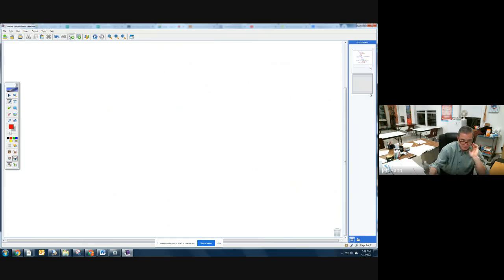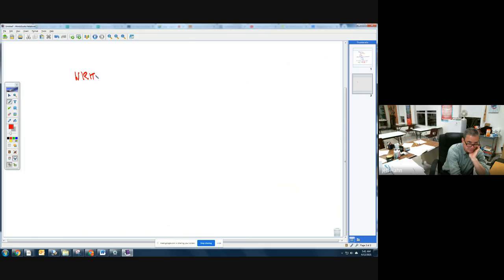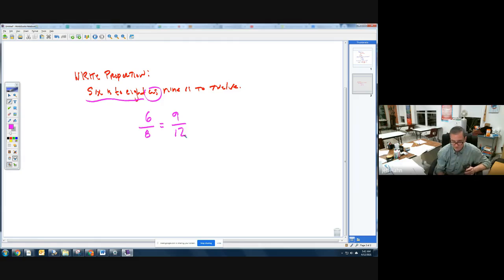Or at other times, they will just ask you to write the proportion. Write the proportion, and the book will say six is to eight as nine is to twelve. They just want me to write that out in fractional form. So it's just going to, again, this is the first part, six is to eight, as is the equal sign, nine is to twelve. And believe it or not, that is proportional. It's a little bit more difficult than what we've been doing, but it is.